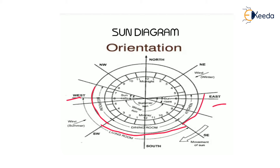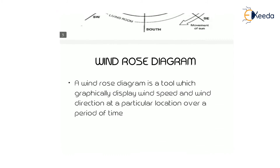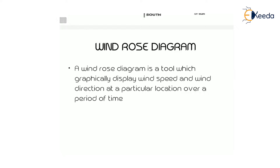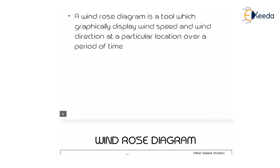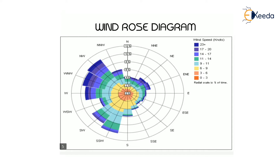Accordingly, the position of the room is determined — the aspect principle is applied using the sun diagram. Next is the wind rose diagram. A wind rose diagram is a tool which graphically displays wind speed and wind direction at a particular location over a period of time.